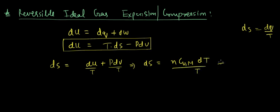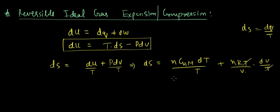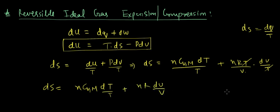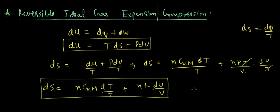This can be written as dS equals nCvm dT upon T, plus p — which can be written as nRT upon V — times dV upon T. The T terms cancel, so we have dS equals nCvm dT upon T plus nR dV upon V. Let's mark this as the first equation.